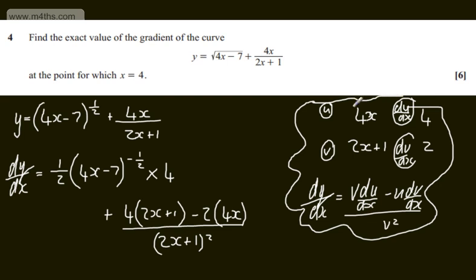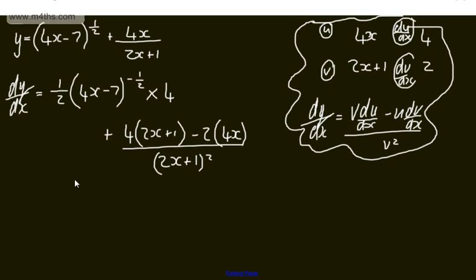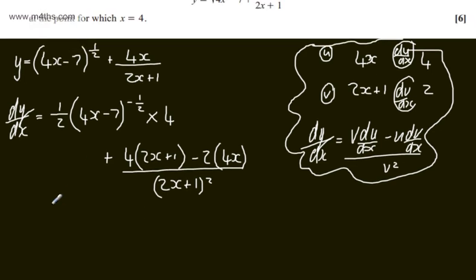At this stage we can simply go ahead and sub x equals 4 in. You might want to tidy this up and just tidy this up. We can have dy by dx, the 4 and 1 half will cancel, we will have 2 over the square root of 4x minus 7.